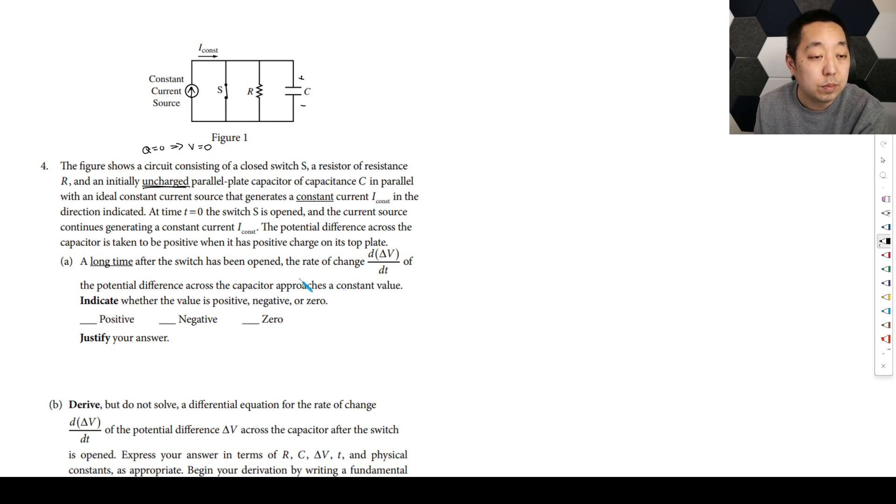Long time after the switch has been opened. Okay, so we've opened the switch for a long time. The rate of change of the potential difference across the capacitor approaches a constant value. Indicate whether that constant value is negative or zero. So if you wait a long enough time, the tricky thing is that there isn't going to be any current going through the capacitor. In fact, all the current is going to flow like this.